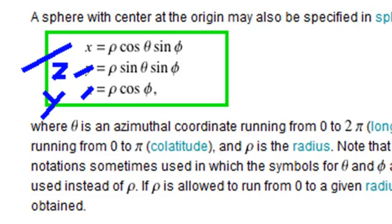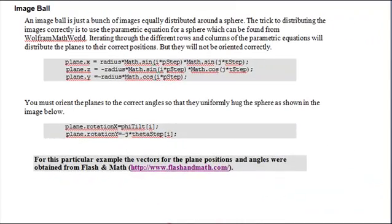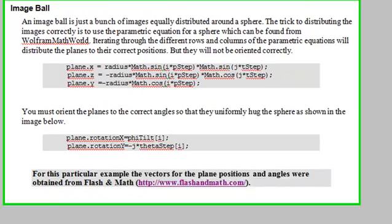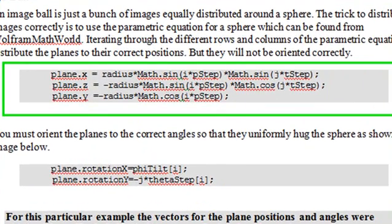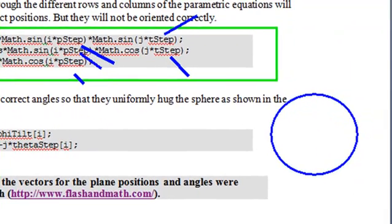We're in chapter one of the book, looking at a section on image ball. Here are the equations we got from Wolfram. For my theta, I now have i times p step. And for my phi, I have j times t step. You can see, this is producing my x, y, and z. But that's going to place planes all around my image in 3D, but it's not going to align them tangent to the sphere.